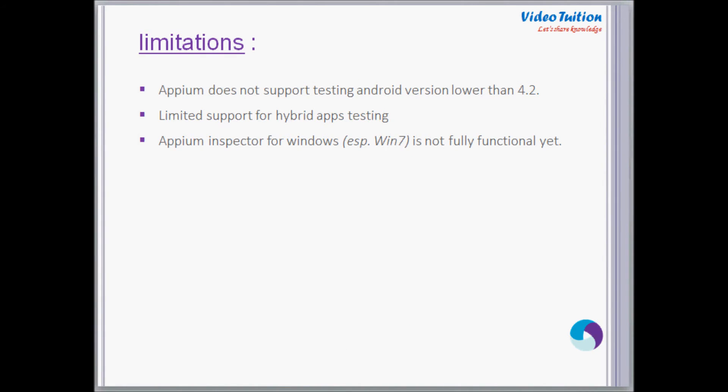Since Appium is in a budding state, the tool is not completely mature for providing a comprehensive mobile application testing solution for large corporates. Here are some limitations or open issues reported for Appium. The first one is that Appium does not support testing mobile applications for Android versions below 4.2 — only devices with Android 4.2 and higher can be tested using Appium.